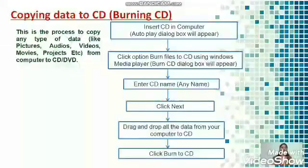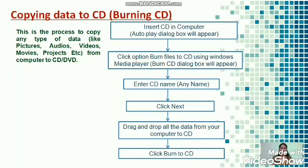Next topic is copying data to CD. Whenever you want to copy data from your computer to a CD, that process is known as burning a CD. Steps: first insert a new CD and you will get a dialog box — select 'Burn files to CD'. Enter the CD name, then click Next. Go to the folder you want to copy to your CD, drop all the files you want, and click 'Burn to CD'. This transfers all the data from your computer to your CD.